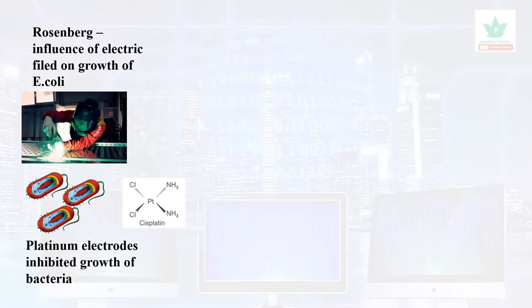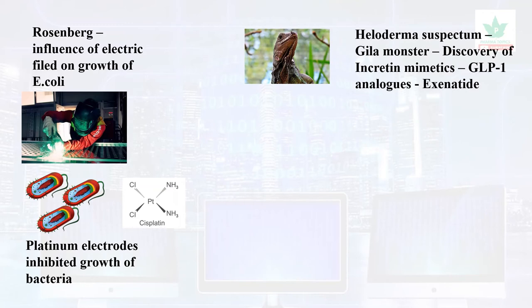Rosenberg was the scientist who studied the influence of electric fields on the growth of E. coli. The electrodes used included platinum electrodes, and he found that platinum electrodes reduced the growth of E. coli. From this observation, the concept of platinum compounds emerged as lead compounds, leading to the discovery of the anti-cancer compound cisplatin.